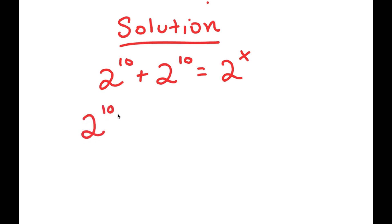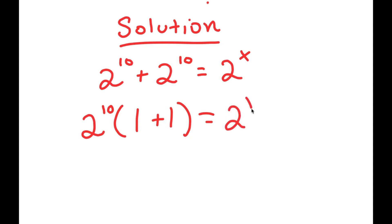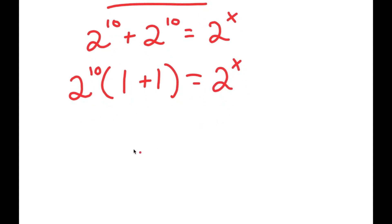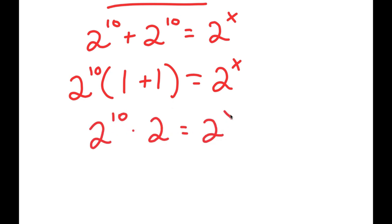If I factor out 2 to the power of 10, I get 2 to the power of 10 times — well, 2 to the power of 10 divided by 2 to the power of 10 is 1. So I get 2 to the power of 10 times 1 plus 1 is equal to 2 to the power of x. Now from here, 1 plus 1 is equal to 2, so I get 2 to the power of 10 times 2 is equal to 2 to the power of x.